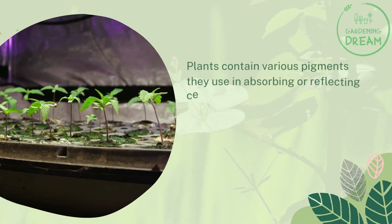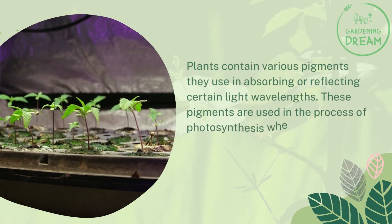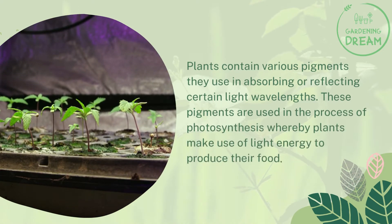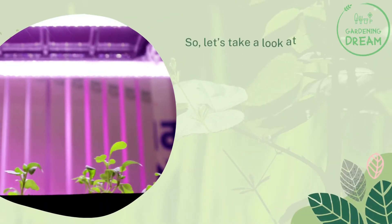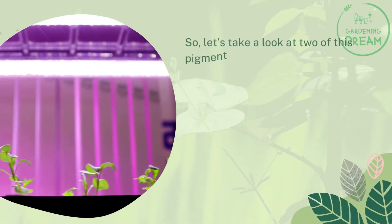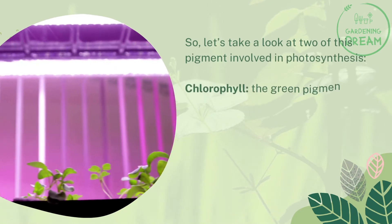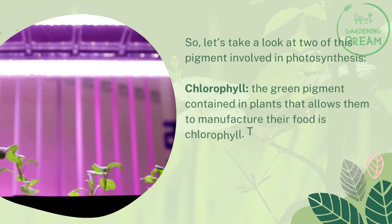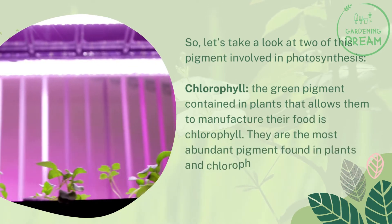Light spectrum pigments: plants contain various pigments they use in absorbing or reflecting certain light wavelengths. These pigments are used in the process of photosynthesis, whereby plants make use of light energy to produce their food. Let's take a look at two of the pigments involved in photosynthesis.